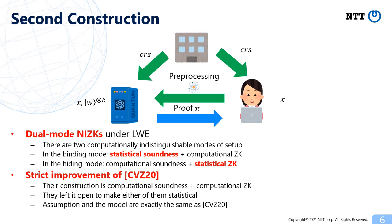The second construction only requires the trusted setup to generate a common reference string, but the verifier has to send some instance-independent quantum information to the prover as a setup. After this setup, the prover can non-interactively generate a classical proof. We show that our construction has a dual-mode property under the LWE assumption. That is, there are two computationally indistinguishable modes: one is the binding mode where it satisfies statistical soundness and computational zero-knowledge, and the other is the hiding mode where it satisfies computational soundness and statistical zero-knowledge. Note that the model and assumption are exactly the same as those of Kladangelo, Vidic, and Gen, where they constructed NIZKs with computational soundness and computational zero-knowledge. They left it open to make either of them statistical, and we solved this open problem.